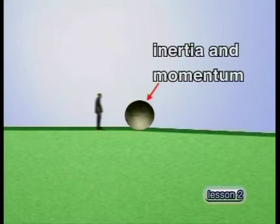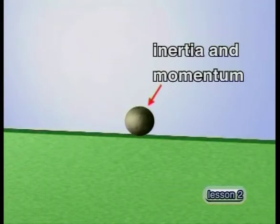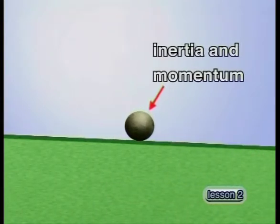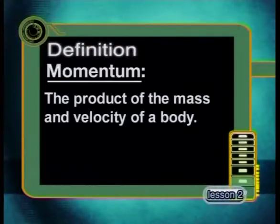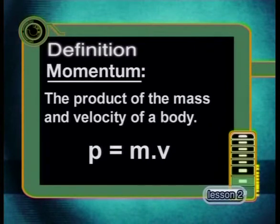When a resultant force overcomes the inertia of a body and sets it in motion, the body acquires another property. This property of a body in motion is called momentum, and it is by exploring momentum that we will find the answers to the questions posed at the beginning of this lesson. Momentum is defined as the product of the mass and velocity of a body. The formula is: p equals m times v, where lowercase p represents momentum, m represents mass, and v the velocity.